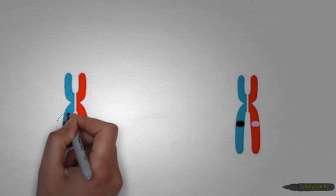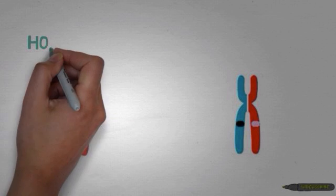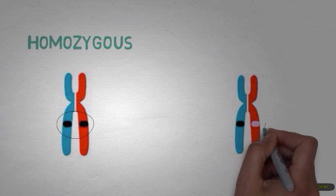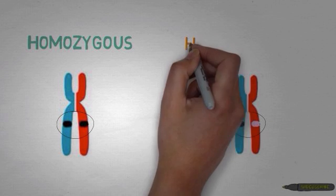These alleles may either be identical, in which case they are referred to as homozygous, or they are different, in which case they are referred to as heterozygous.